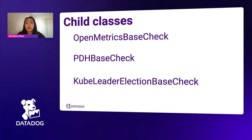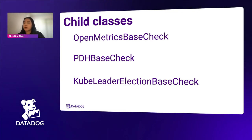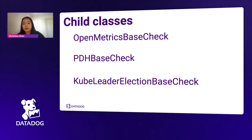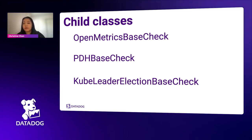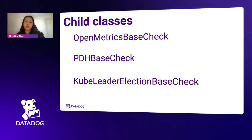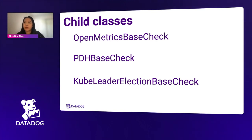The PDH base check does something similar, collecting metrics from Windows performance counters via the PDH API. These base classes are very easily configured — they can be configured just from the config itself, and sometimes you don't even technically need additional development because the providers share common standards.